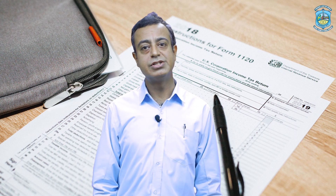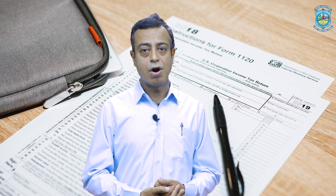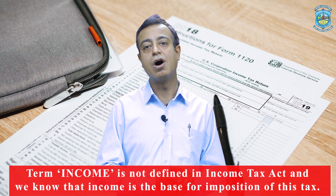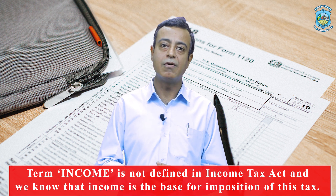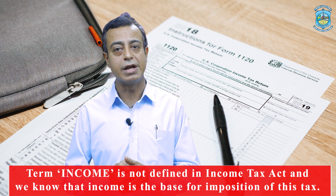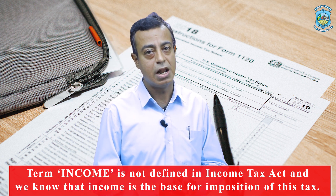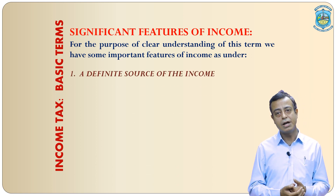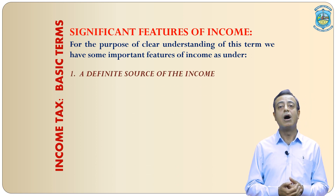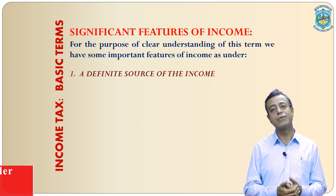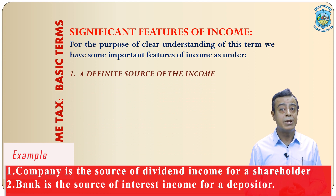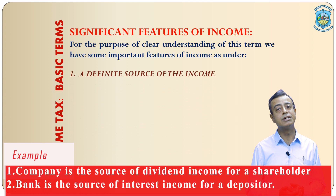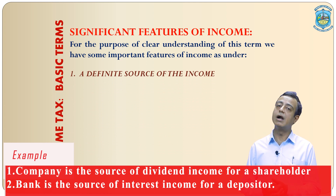Dear friends, this list is not conclusive, as we have many more incomes to be included in the definition of income. So here we have the list of main features for identification of income that is taxable or not under this particular act. First feature: all incomes have a particular or definite source. For example, a company is the source of dividend income for a shareholder. A bank is the source of interest income for a depositor.